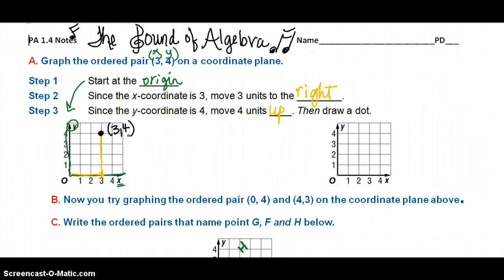Alright, so I hope this is review. I want you to try to do example B, so pause the video right here. Really, I want you to pause and try to plot 0, 4, and 4, 3 on the graph to the right. Now let's see how you did. Let's see how you did with 0, 4. The 0 might have thrown you off.